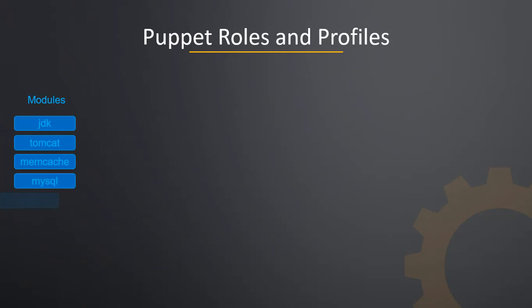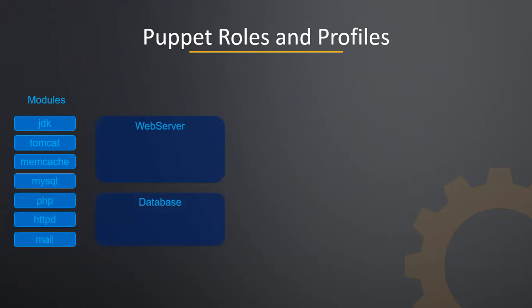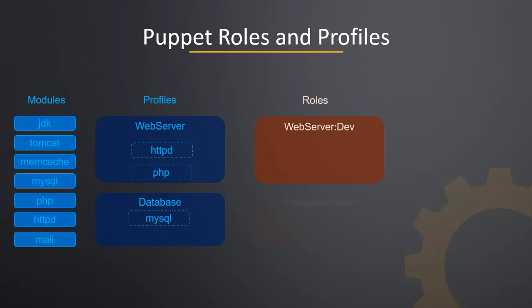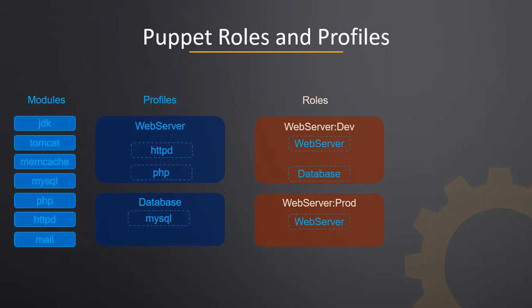We have installed Puppet and created Puppet modules with automation expertise, and everything in our environment is working fine. This is one of the commonly used Puppet design models, but it doesn't fit everywhere. Consider a case where you are developing modules at a rapid pace and assigning them to nodes by including them inside the main manifest. After some time the manifest file gets bigger, complex, and unmanageable. In such cases, assigning modules directly into the manifest is not a good design model, and we need to look for other solutions. This is where Puppet roles and profiles model will help manage a rapidly growing Puppet environment.